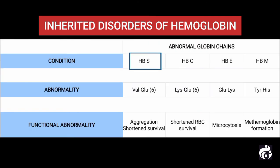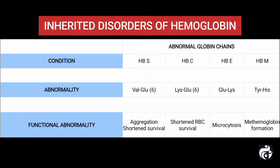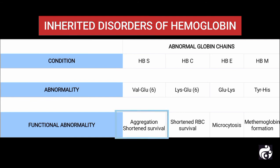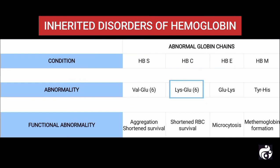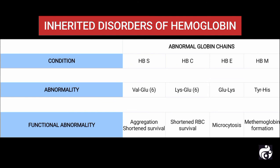In the case of abnormal globin chains, in HbS, that is sickle cell anemia, valine is replaced by glutamic acid on the beta globin chain, which causes aggregation and shortened survival of the red blood cells. Whereas in HbC, lysine is replaced by glutamic acid; in HbE, glutamic acid is replaced by lysine; and in HbM, tyrosine is replaced by histidine.